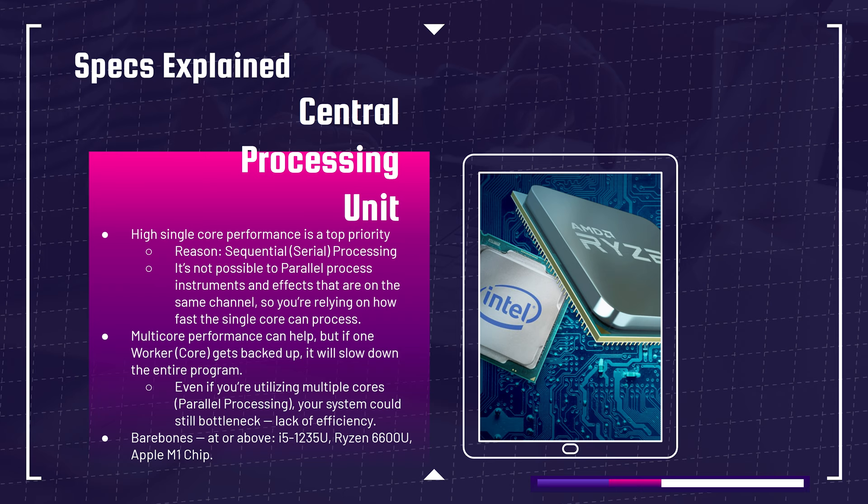Even if you're utilizing multiple cores — known as parallel processing — your system could still bottleneck, creating a lack of efficiency. At a bare bones minimum, anything above an i5-1235U, the Ryzen 5 6600U, or the Apple M1 chip is a great starting point for a music production laptop. I would not recommend anything lower than those three CPU levels.